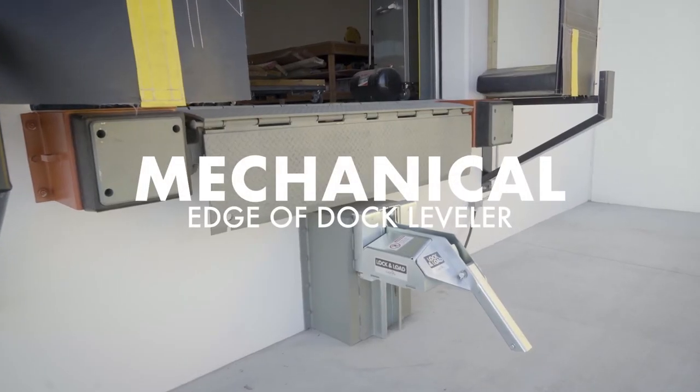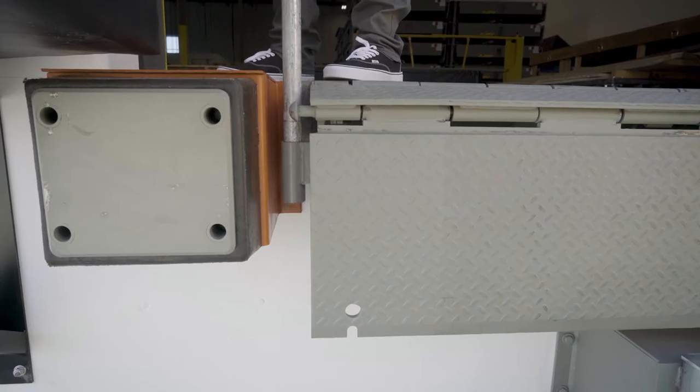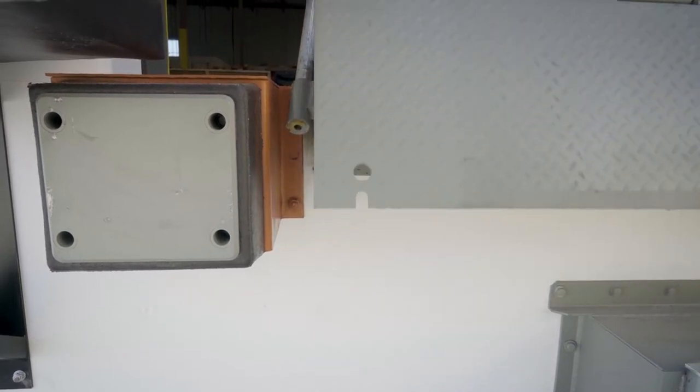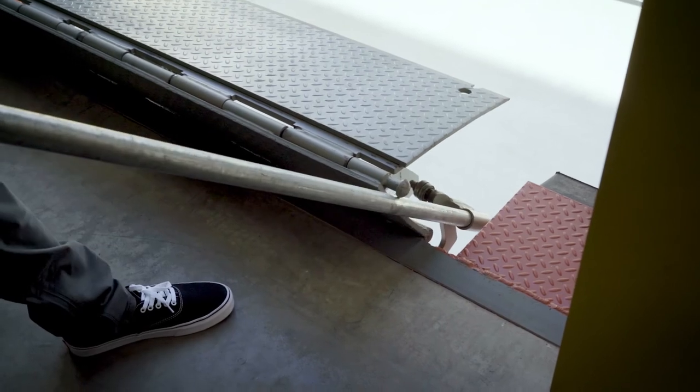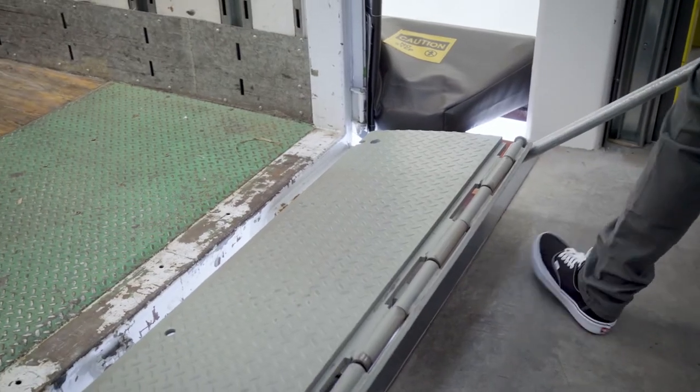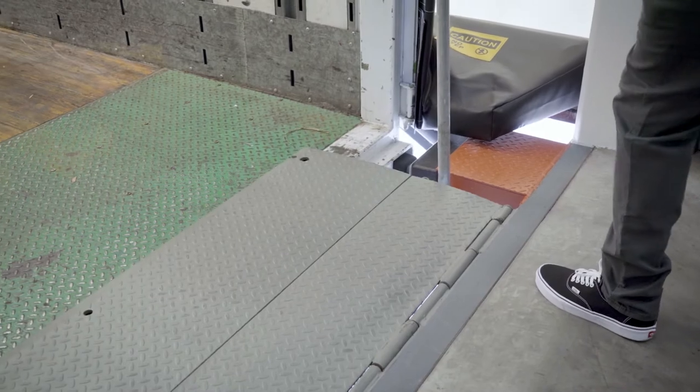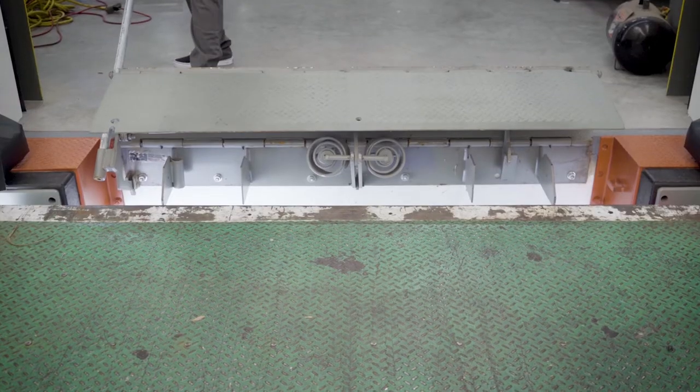Operating a mechanical edge of dock leveler: The dock attendant pulls the operating handle to raise the center plate back past vertical, engaging the lip extend link arm. Pushing the operating handle forward then extends the lip plate over and onto the trailer bed.